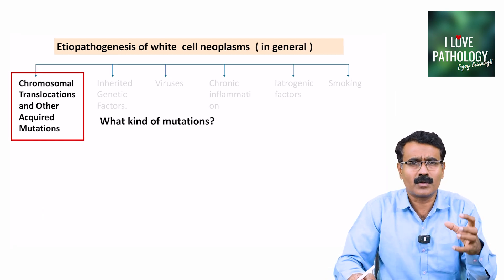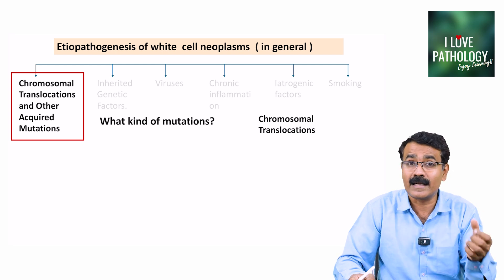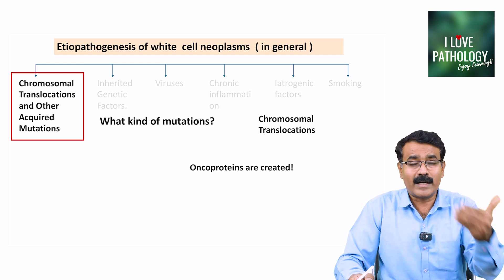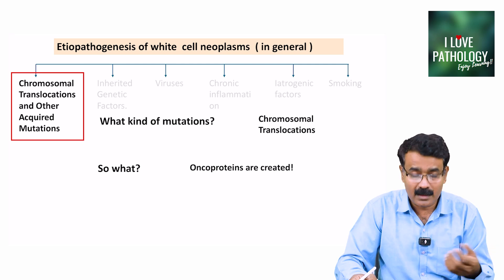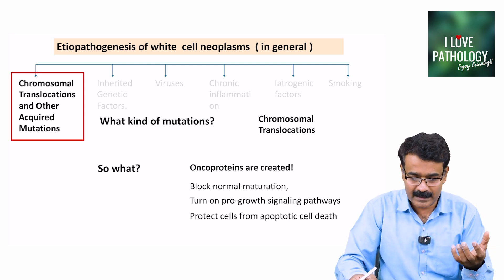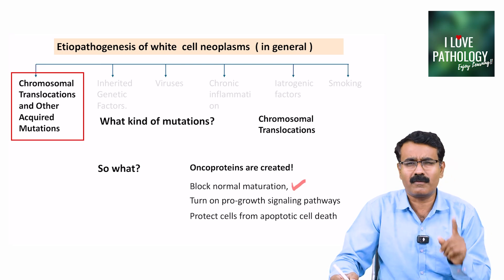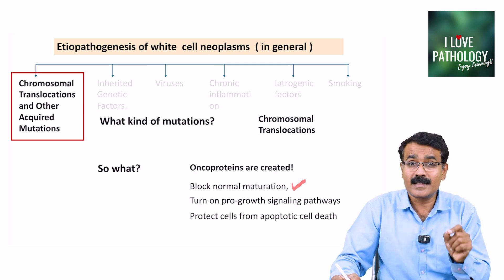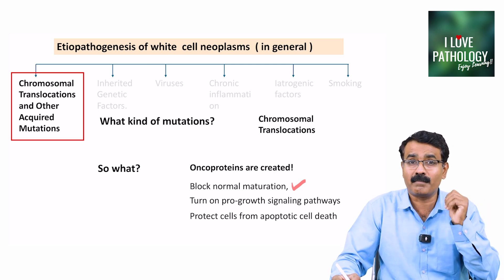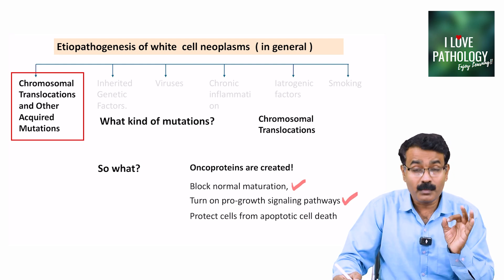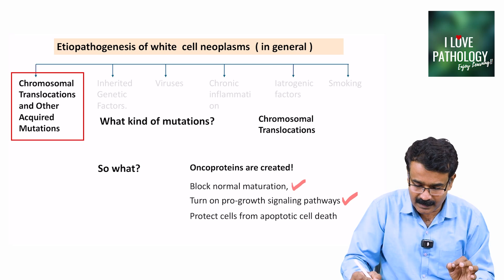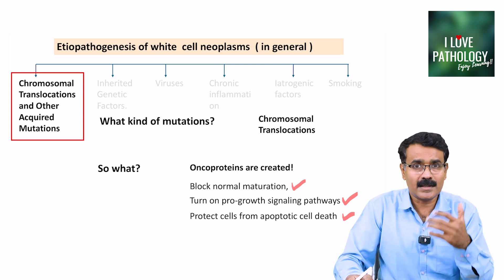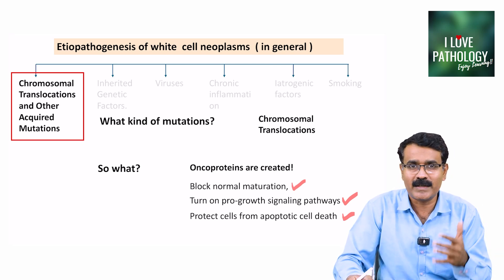The most common type of mutations in these cases are chromosomal translocations. Once these translocations occur, the final product formed is oncoproteins. These oncoproteins: first, block normal maturation — meaning cells are arrested at one particular point of division (maturation arrest); second, they turn on pro-growth signaling pathways; and third, they protect the cells from apoptotic cell death.